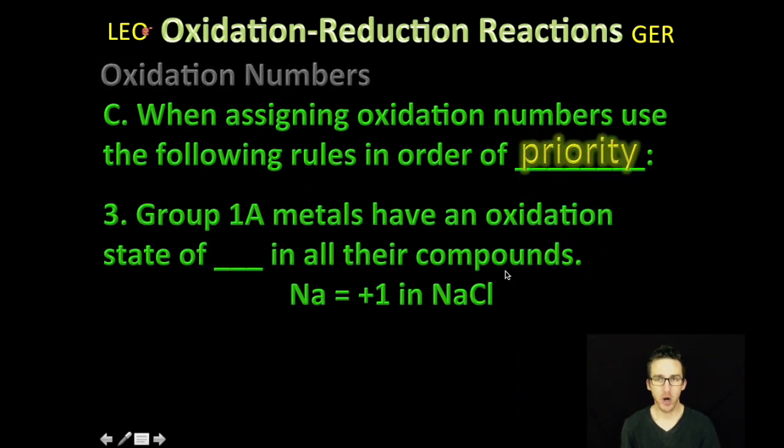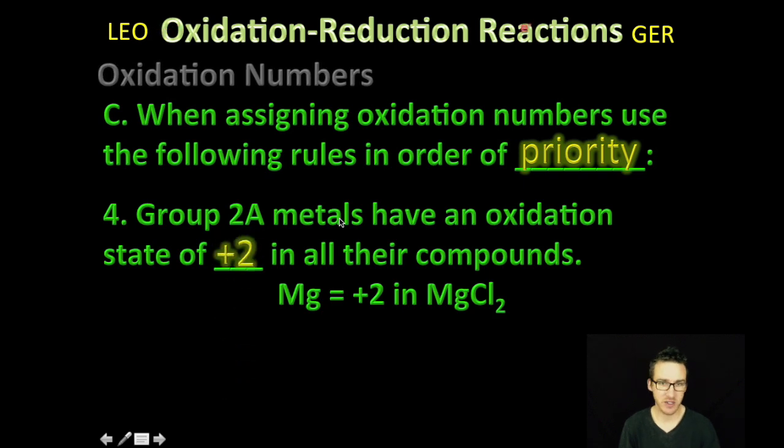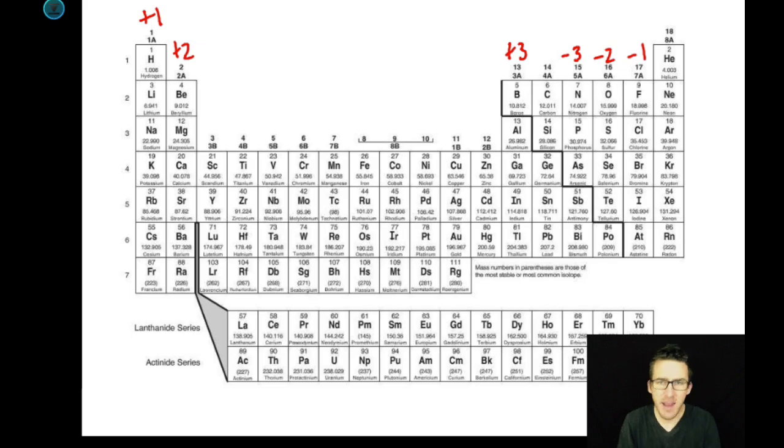Rule number three. Group 1A metals have an oxidation state of plus one in all of their compounds. So, for example, sodium will have a plus one charge in sodium chloride. Again, no new news here. Rule number four. All group 2A metals have an oxidation state of plus two in all of their compounds. So, for example, in magnesium chloride, magnesium will have an oxidation number of plus two. Again, none of this should be new. Periodic table.